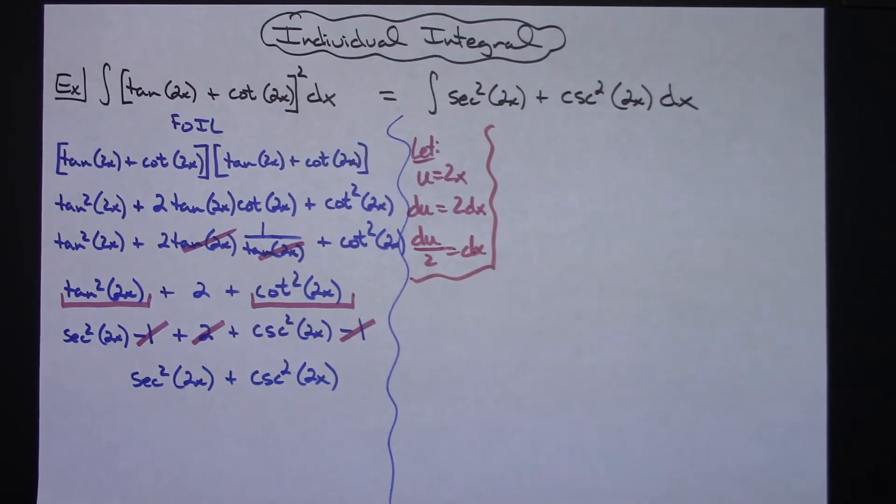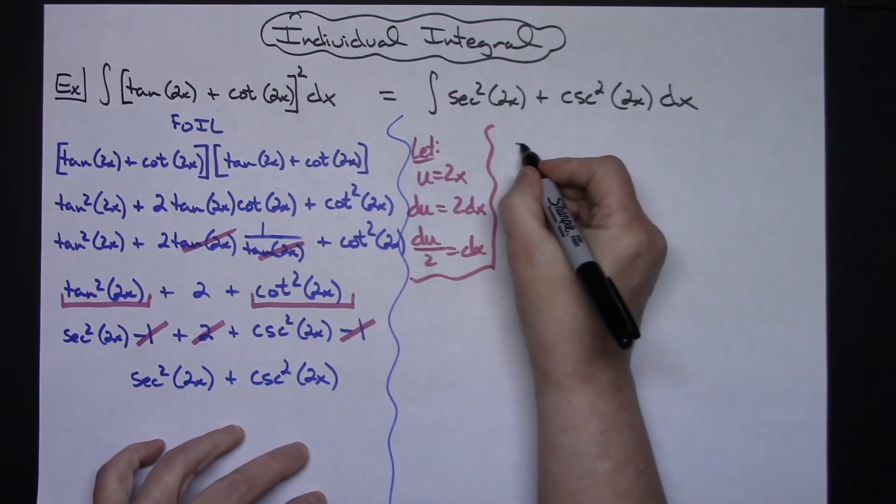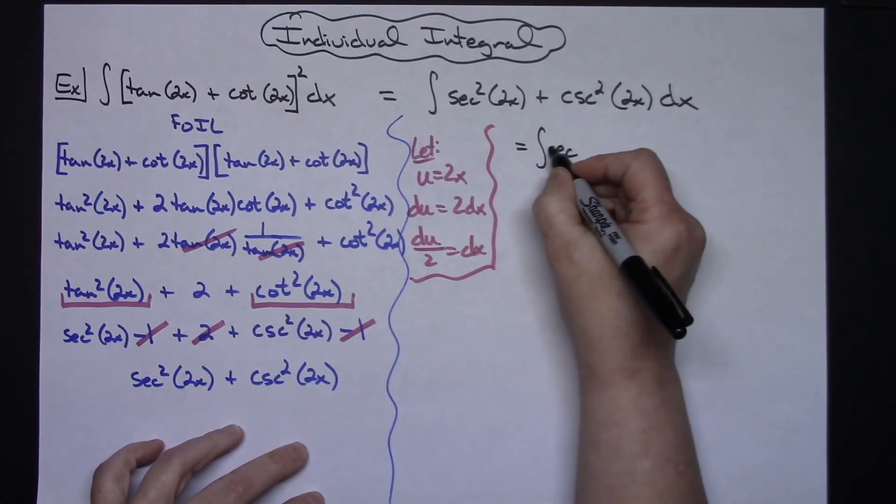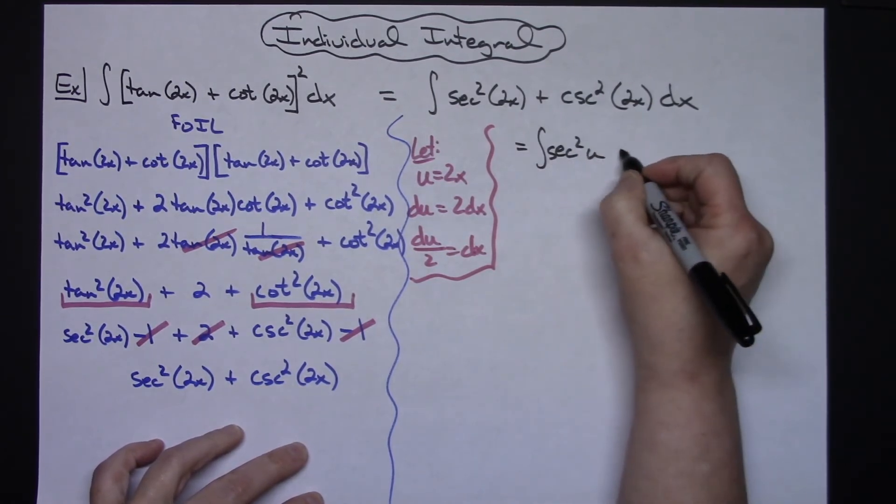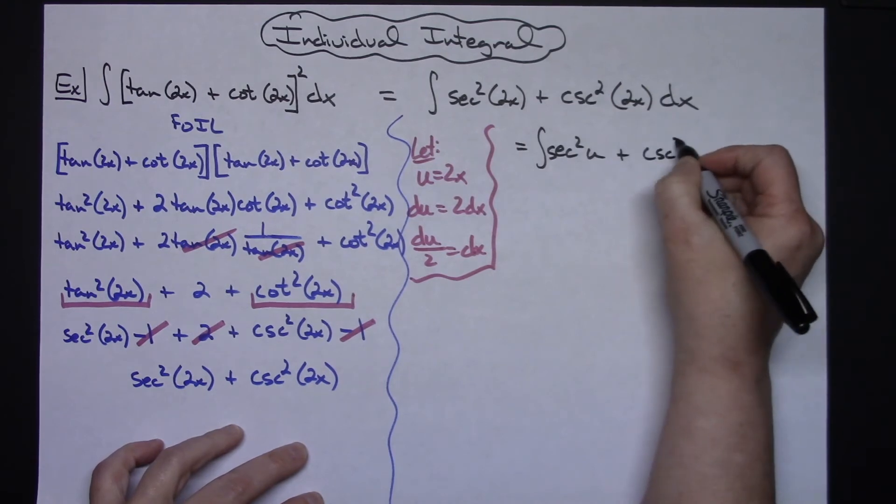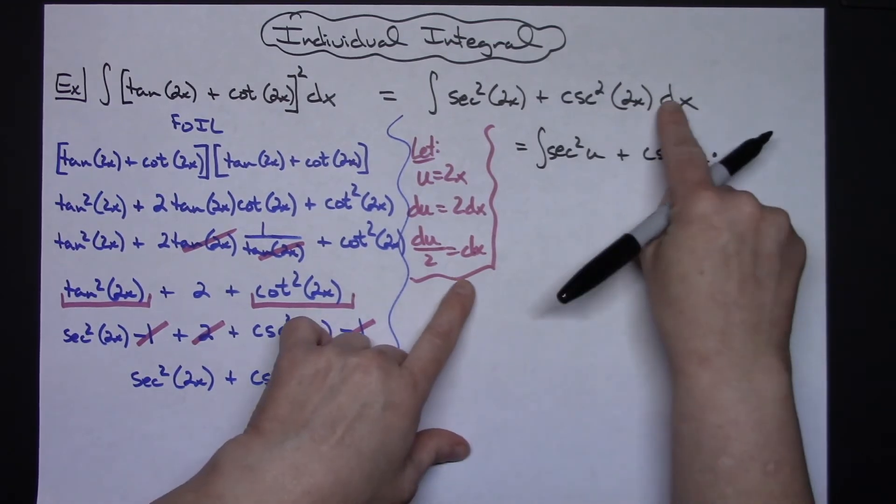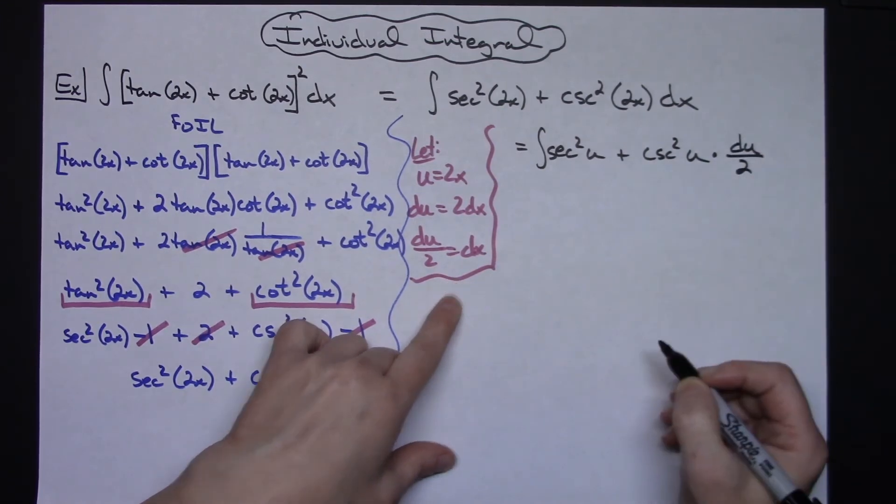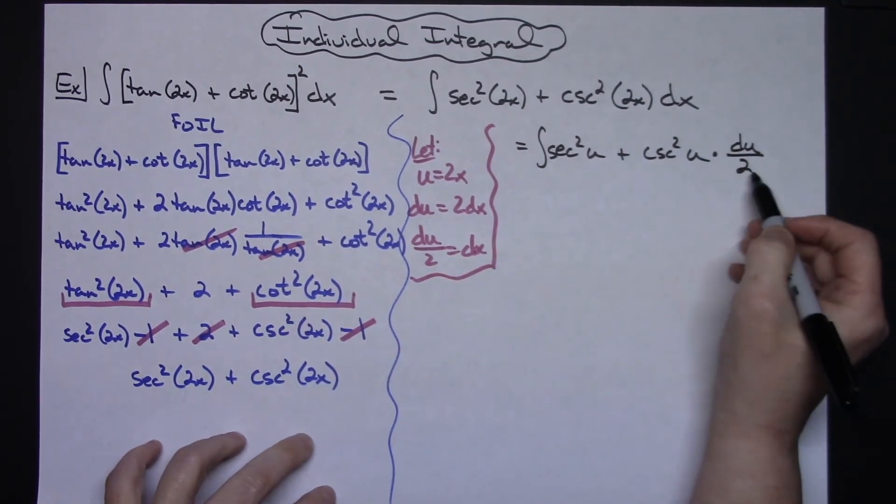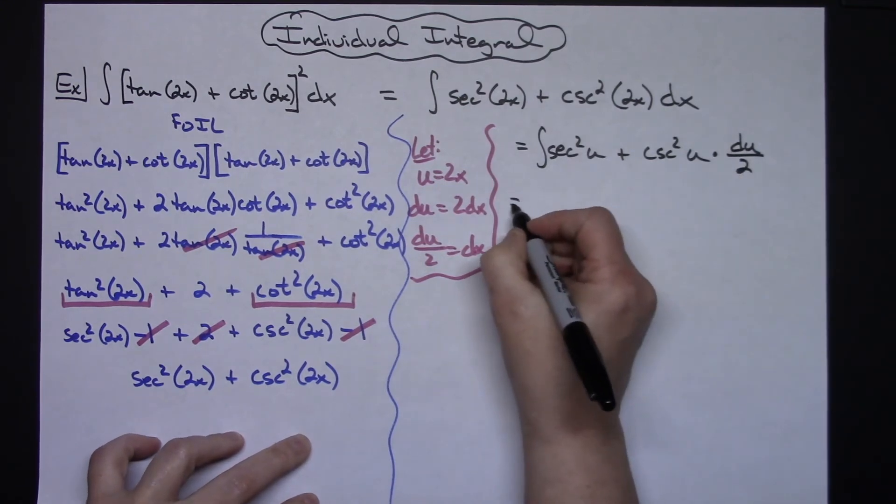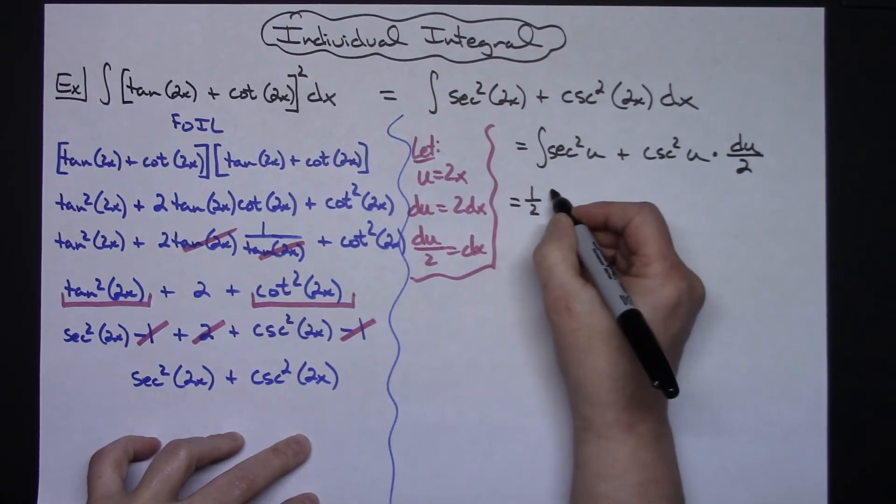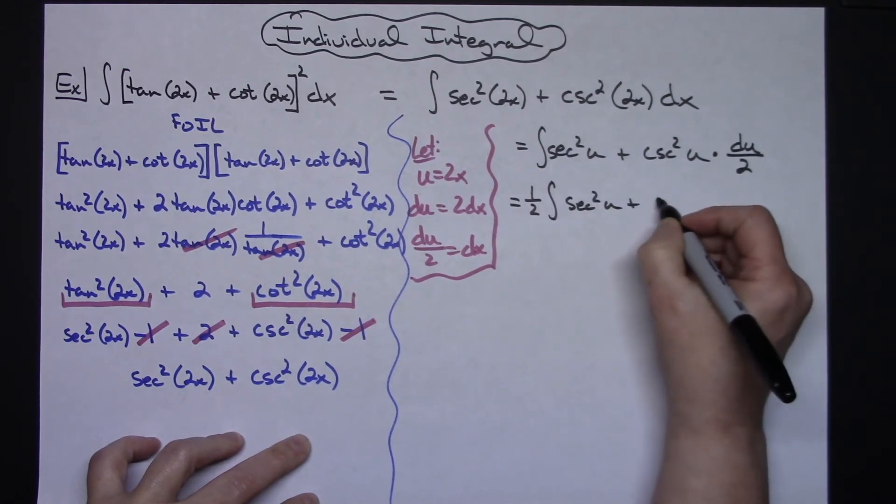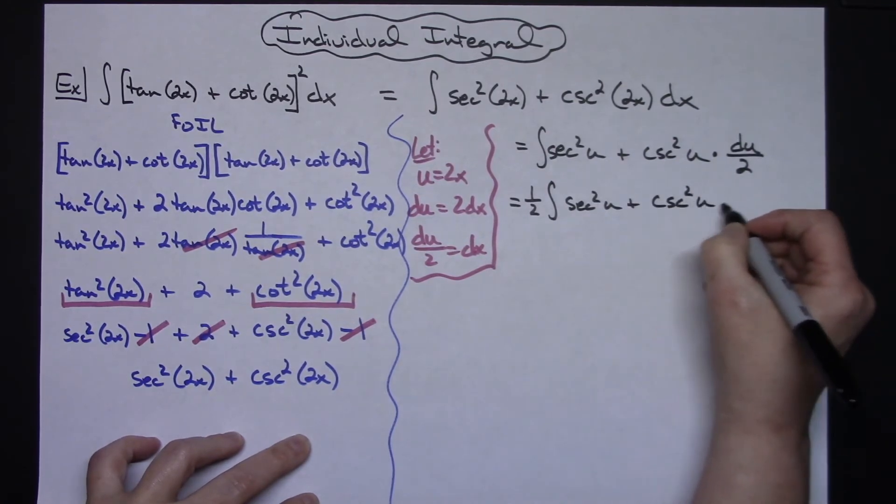Okay, from there I can go up to my original integral and do some substituting. So I'll have the integral of secant squared u plus cosecant squared u and then replacing dx with what it equals I will have a du over 2. Okay, I can pull out this 1 half. So 1 half times the integral of secant squared u plus cosecant squared u du.